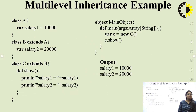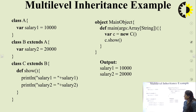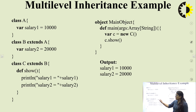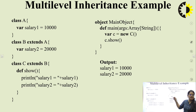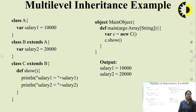Next is Scala multilevel inheritance example. Class A has salary1 = 10000, Class B extends A, and Class C extends B. In the main method, we create an object of class C: val c = new C, then call c.show(). The output will be: salary1 = 10000 and salary2 = 25000.